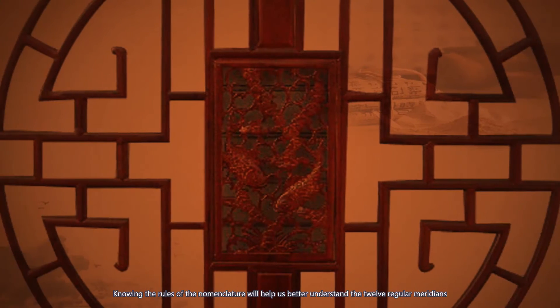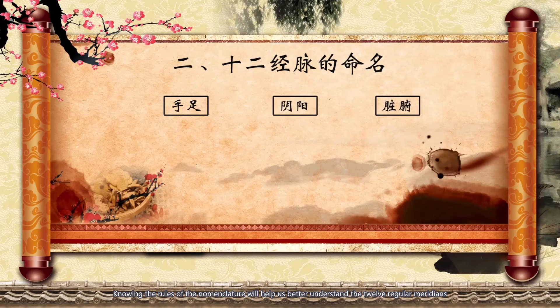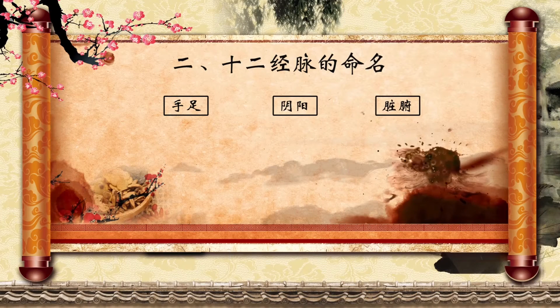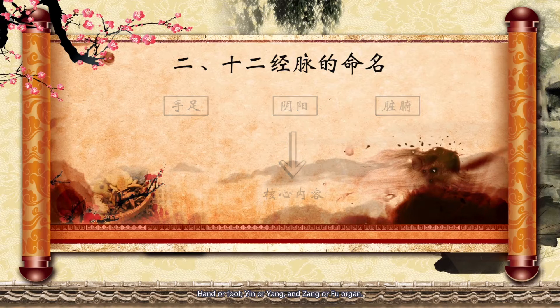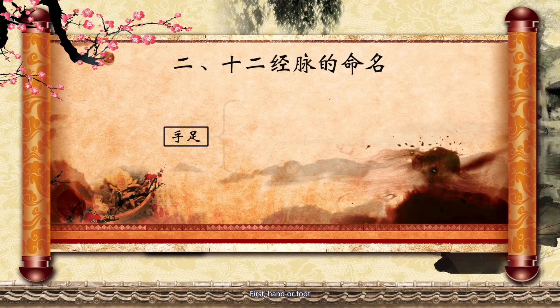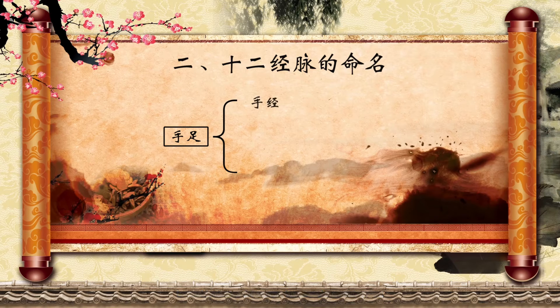Second, the nomenclature of the 12 Regular Meridians. Knowing the rules of nomenclature will help us better understand the 12 Regular Meridians. The nomenclature is based on three factors: hand or foot, yin or yang, and zang or fu organ. First, hand or foot — considering the courses traveling along hands or feet, they were named meridian of hand or meridian of foot.